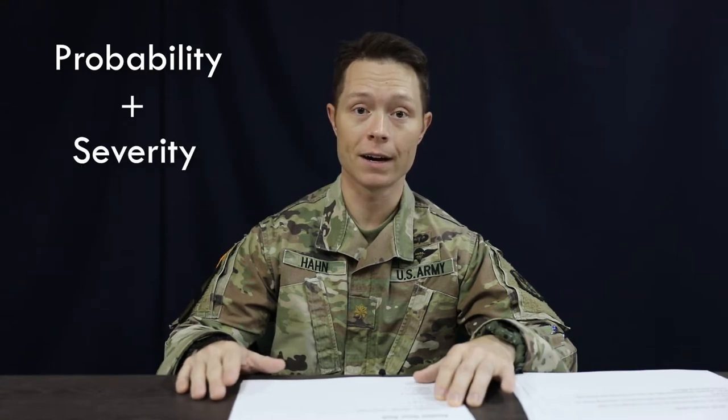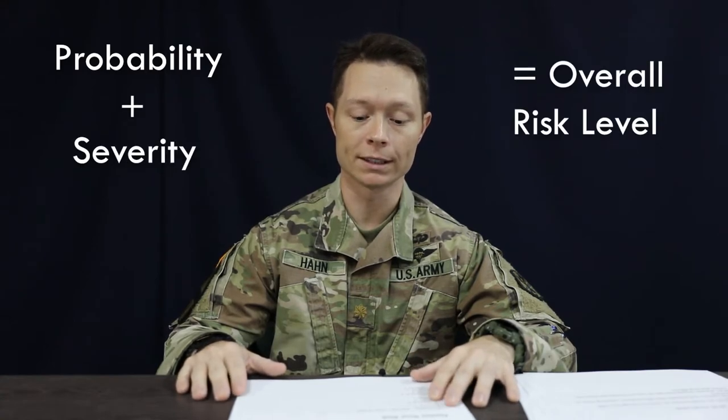I'll give you a brief rundown on how to assess your risk. You'll take the probability plus the severity to get your overall risk level. Keep in mind numbers come into effect here — if you're conducting training at a squad level and you have a low risk of one percent, it's extremely low. However, if the whole brigade is doing it, your sample size has increased to maybe a few hundred soldiers, so it's statistically more probable that this event will occur. Keep that in mind when assessing the overall risk.